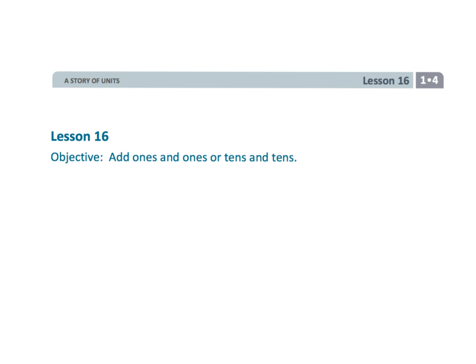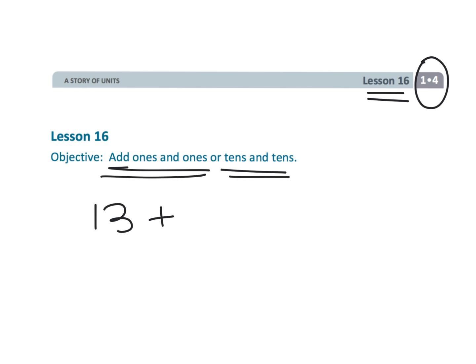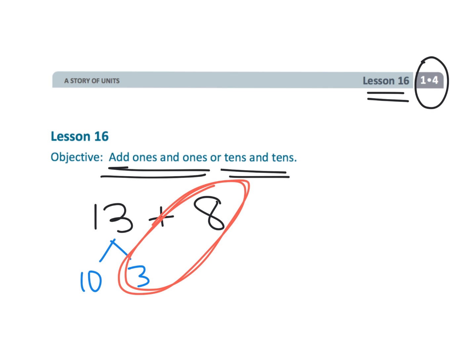That wraps up first grade module 4, lesson 16, where students are going to be adding ones to ones and tens to tens using decomposition. The idea being that thirteen can be decomposed as ten and three, allowing us to add ones to ones and then add in the remaining tens afterwards.